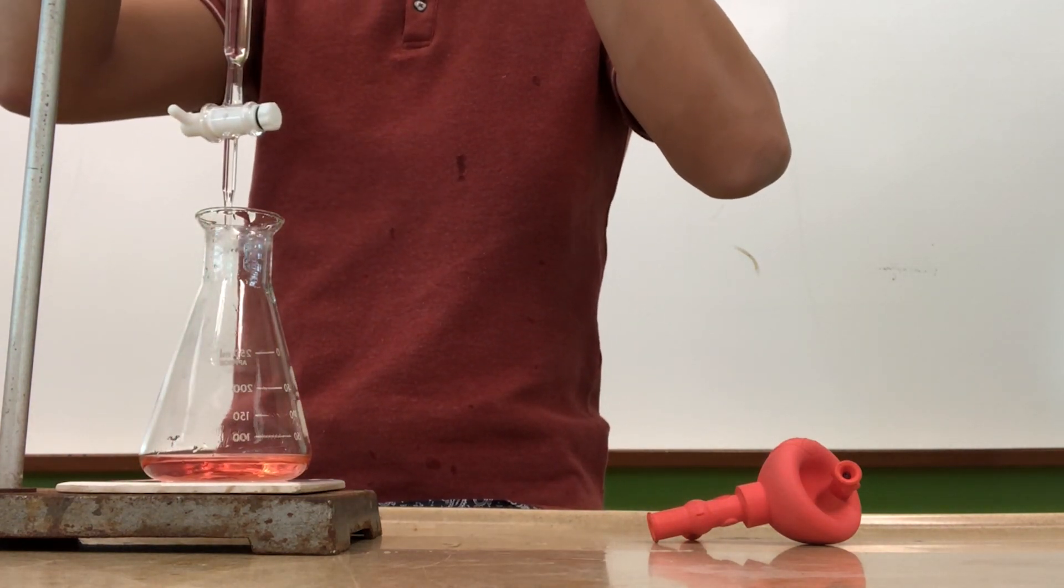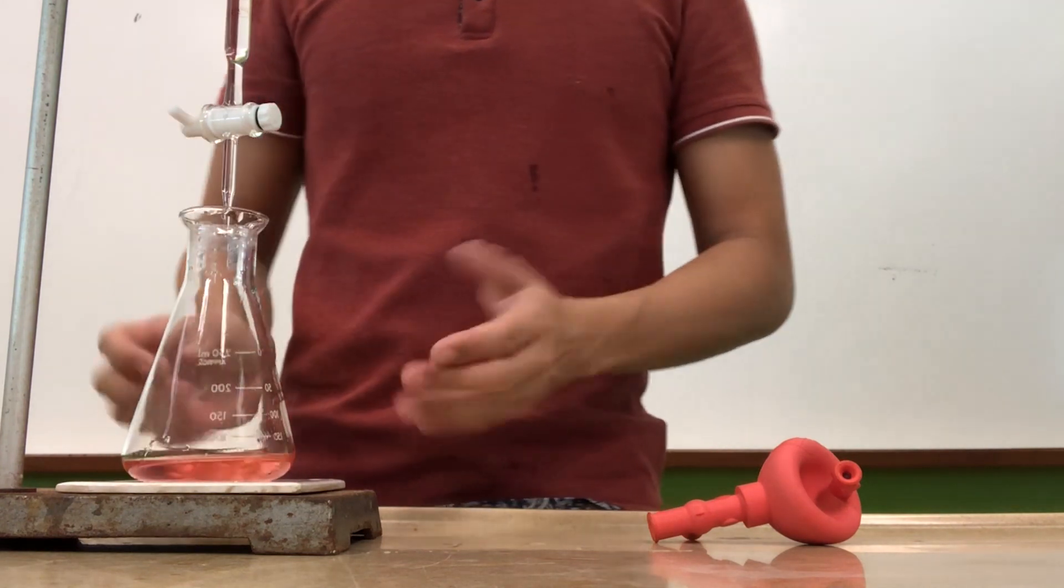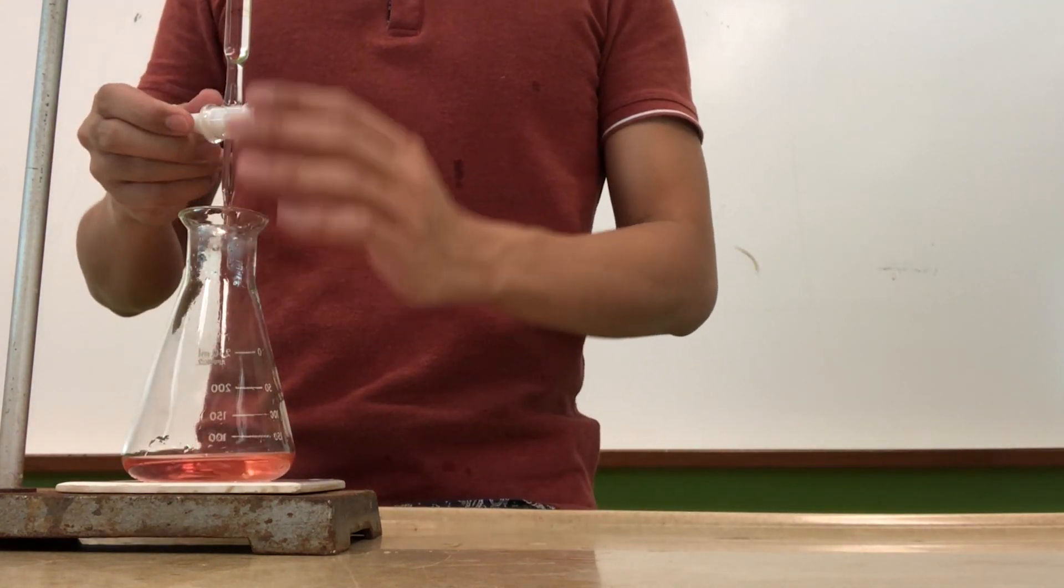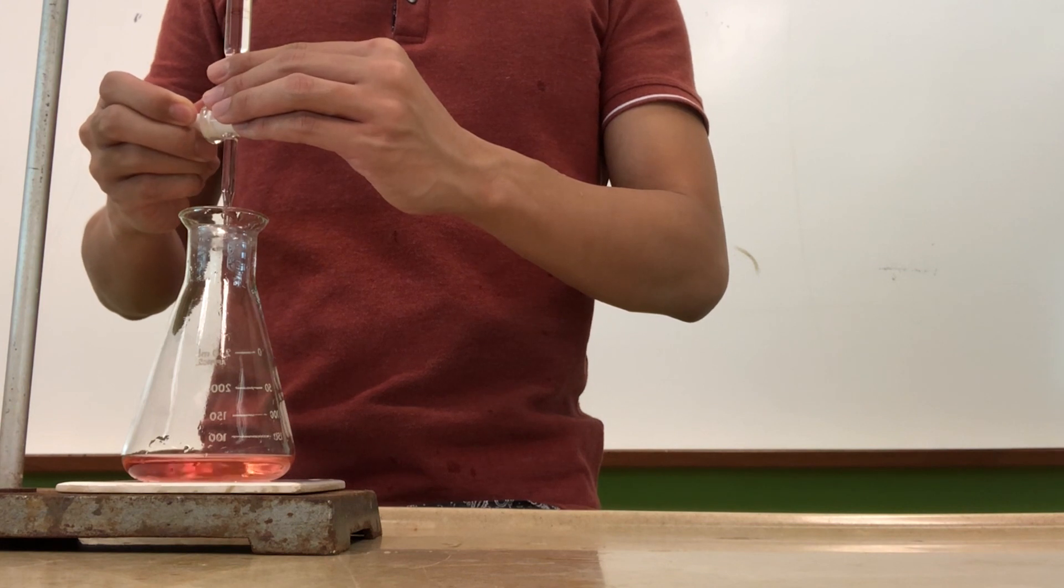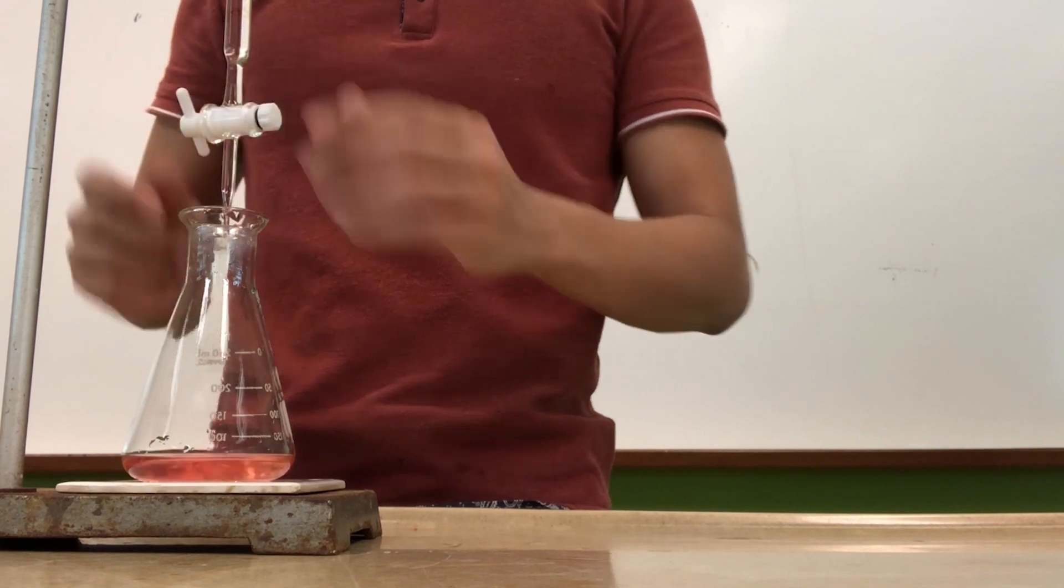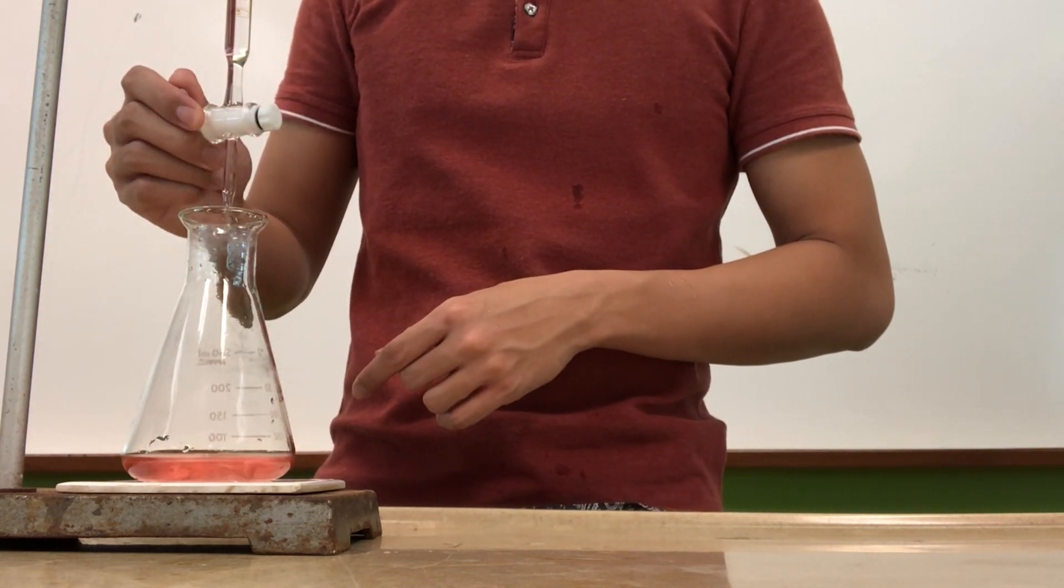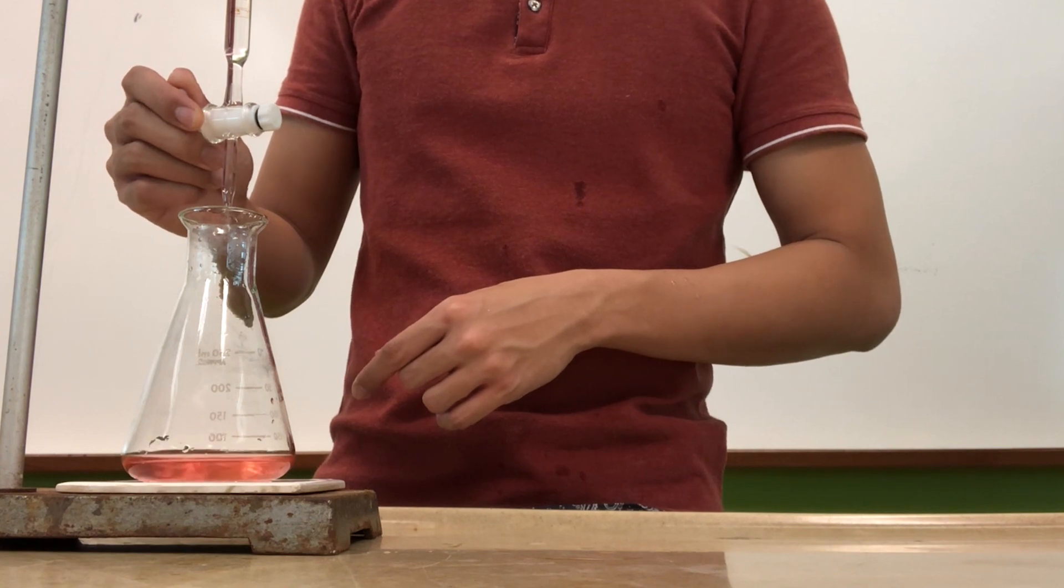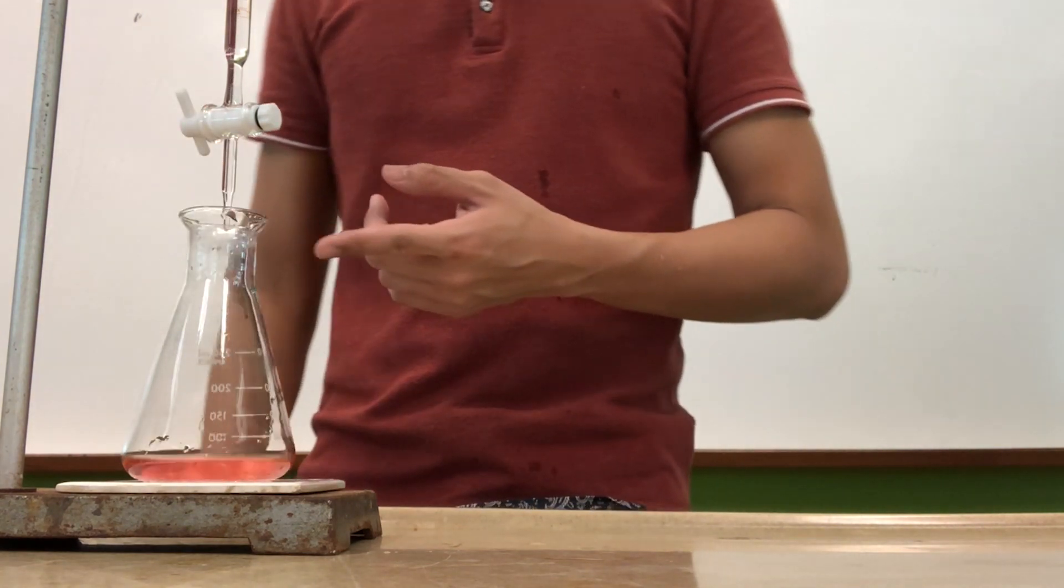Now let's set up the burette to make sure that we can dispense the solution directly into the conical flask. As mentioned previously, let's try to find out how much should we turn the knob in order to achieve the dropwise addition first. Remember the angle that you are turning the knob to, so that later on when you need to turn it to dropwise, you can achieve this angle as soon as possible.